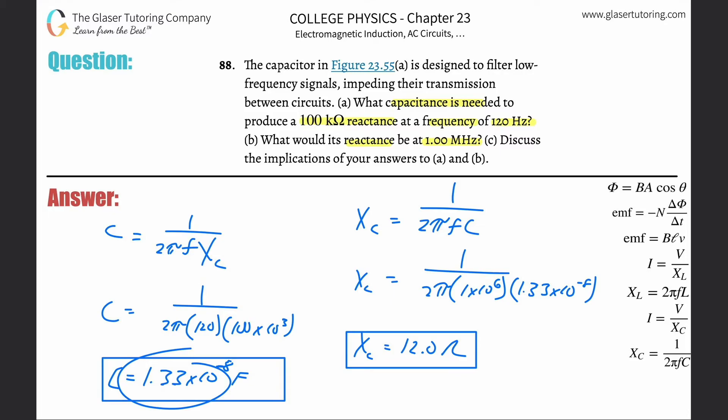Letter C: Discuss the implications of your answers to A and B. As you can see, there's a couple of items that are changing. Notice here we're talking about a relatively higher capacitive reactance.